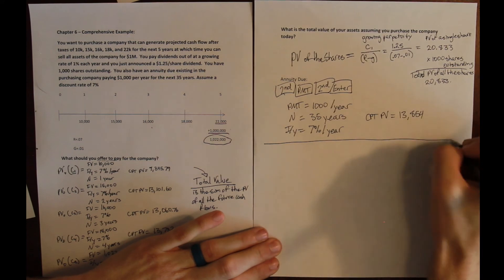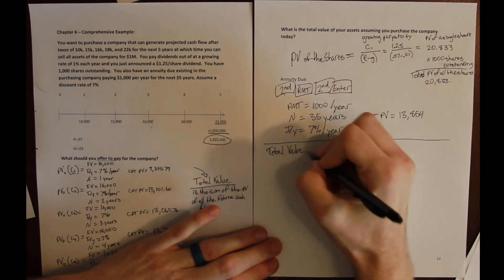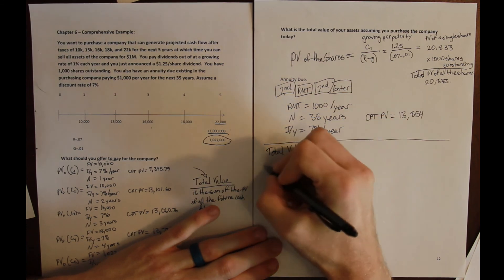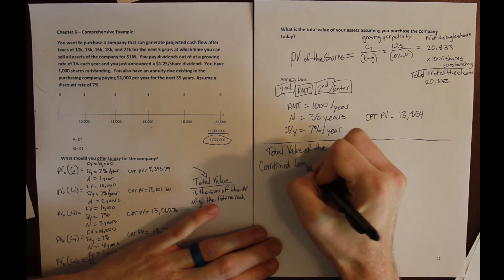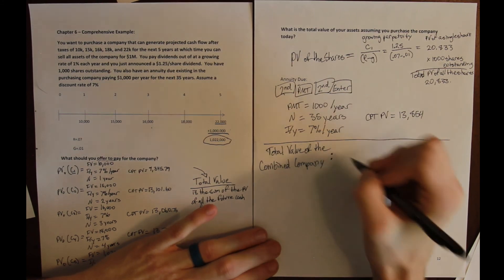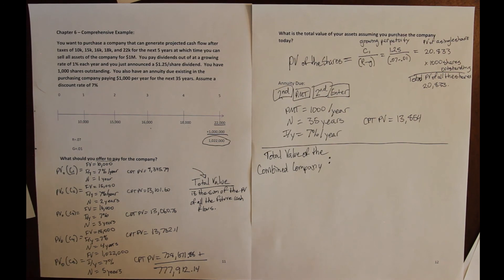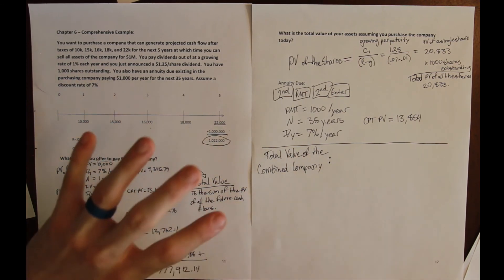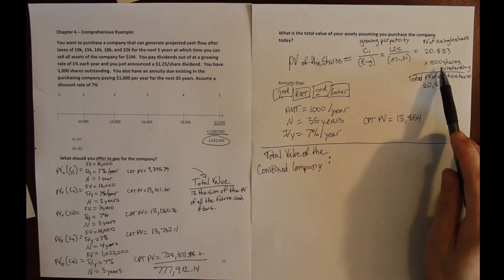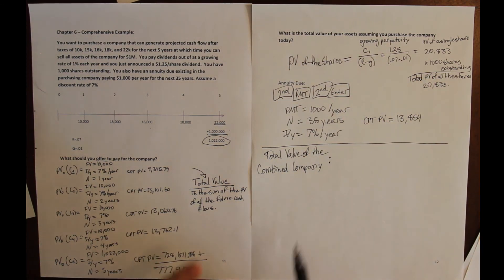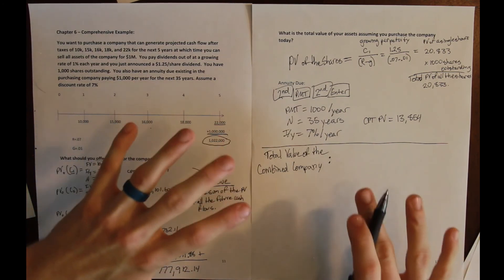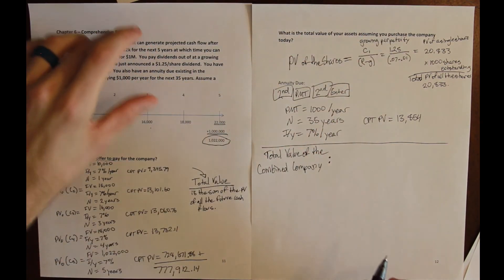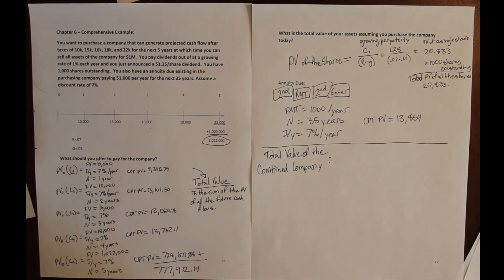So the total value of the combined company is the sum of all of these present values of all of these cash flows. And, of course, this example is a little bit contrived. You know, I just want to give you an excuse to see all of the different problems, all of the different types of problems that we learned in action in some financial context. We will go into a lot more detail about valuing shares, about valuing stocks, about valuing bonds and companies as the class goes on. So don't freak out if this seems like a complicated example. Really what this is is an example of each of the things that we learned with some context that we haven't quite learned in full detail yet.